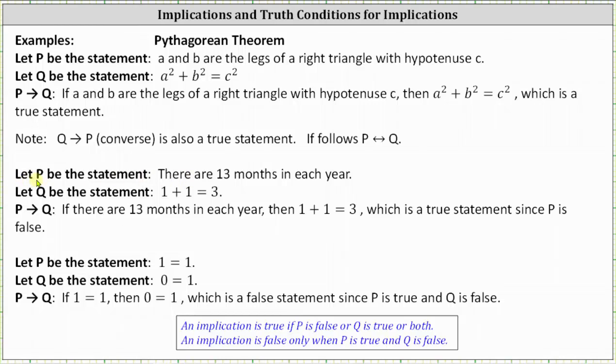Next, let P be the statement: there are 13 months in each year. Let Q be the statement: 1 + 1 = 3. The implication P then Q is: if there are 13 months in each year, then 1 + 1 = 3. Notice here the hypothesis P is false and so is Q the conclusion, and therefore the implication is true.